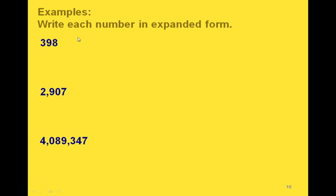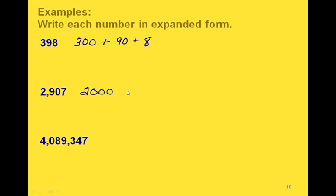So now we're going to write each one of these numbers in expanded form. We have 3 in the hundreds place, so we're going to write 300. Then we have 9 in the tens place, so we write 90, and then 8 in the ones place. How about this one? We're starting out with 2 in the thousands place, so we have 2,000. Then 9 is in the hundreds place. We don't have anything in the tens place because we have a zero, so we can just write 7.